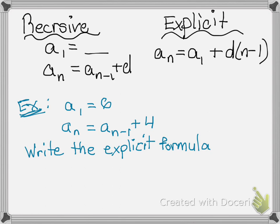Now, as you can see in the first example, they give us the recursive formula where it says a sub 1 equals 6, a sub n equals a sub n minus 1 plus 4. We already know what the first term is. We already know what our common difference is. And that's all we need for the explicit formula.